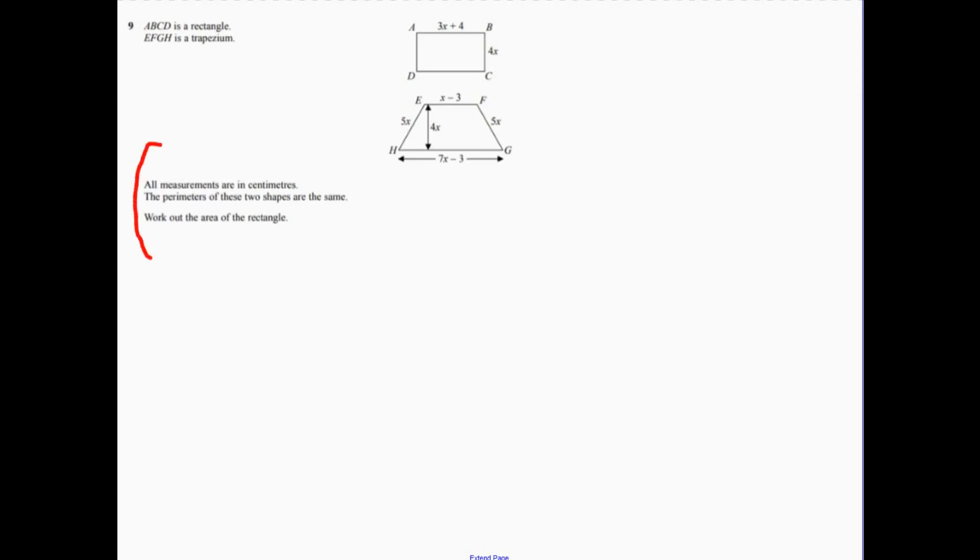Question 9. So it tells me just here the perimeters of these two shapes are the same. So we could therefore write down that... If I'm thinking about the rectangle, I need to work out what the x bit is before I can do anything at all.